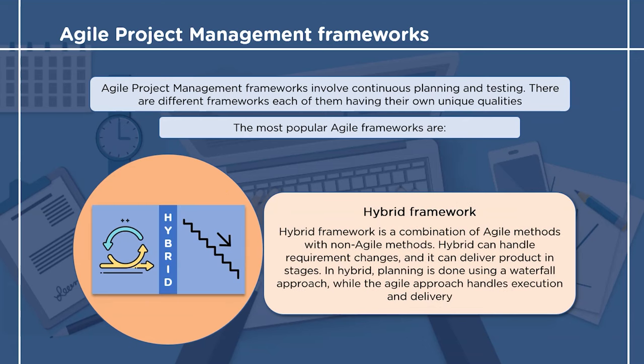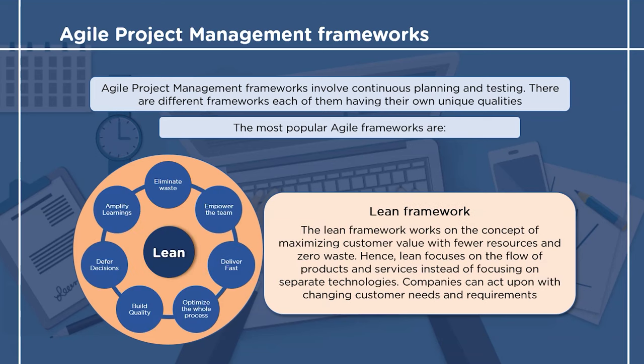The third framework is the hybrid framework, which is a combination of agile methodology and non-agile methodology. In a hybrid framework, planning is done using the traditional way of project management while execution and delivery is done using agile methodology. Since hybrid is a combination of the two, it handles requirement changes and delivers the product in different stages.